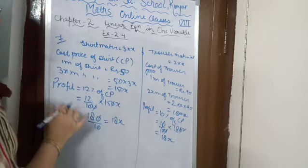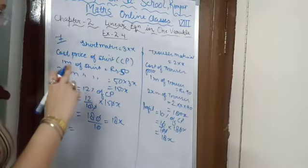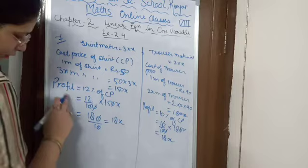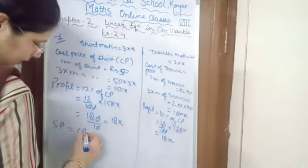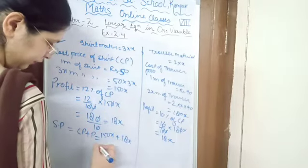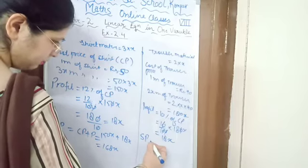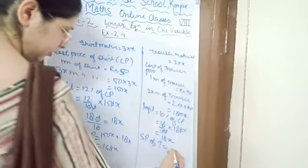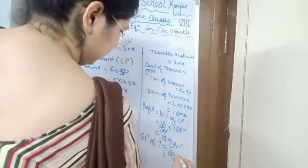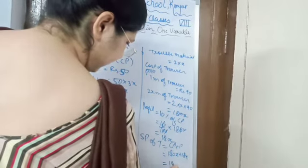Now we find the selling price. When profit is there, SP = CP + profit. SP of shirt = 150X + 18X = 168X. SP of trouser = 180X + 18X = 198X.